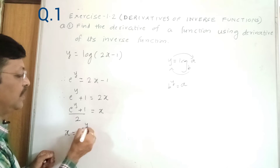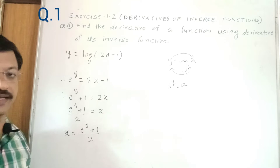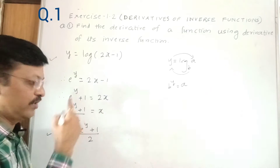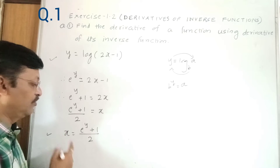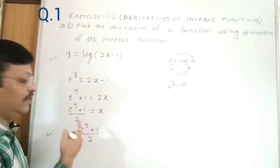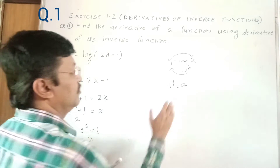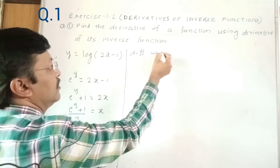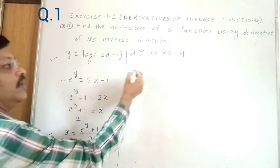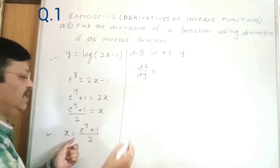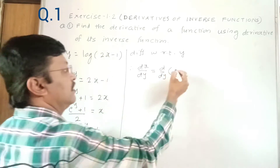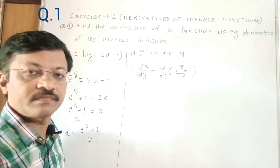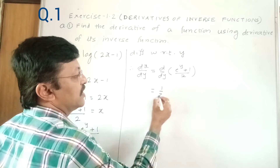So x = (e^y + 1)/2 is our inverse function. Now differentiate with respect to y. dx/dy = d/dy of (e^y + 1)/2. The constant 1/2 comes out, leaving d/dy of (e^y + 1). Applying sum rule: d/dy of e^y plus d/dy of 1, where d/dy of 1 = 0.